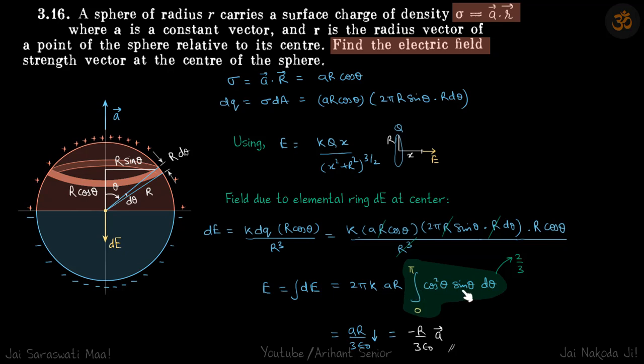So I am not solving this integration, you can do it by putting cos² θ as 1 - sin² θ and we have a standard result for sin³ θ. So if you integrate it from 0 to π you will get the value 2/3 of this integral.